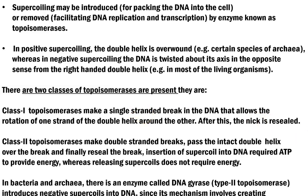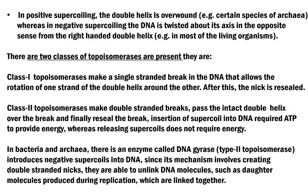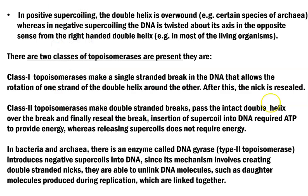There are two kinds of topoisomerases, or gyrases, existing in nature. Class 1 topoisomerases make a single-stranded break in the DNA that allows the rotation of one strand of the double helix around the other; after making this rotation, that nick will be resealed. Whereas class 2 topoisomerases or gyrases are commonly associated with making a double-stranded break — they cause a double-stranded break, pass the intact double helix over the break, and finally reseal the break. Insertion of a supercoil into DNA usually requires energy in the form of ATP, whereas releasing of the supercoil does not require any energy.